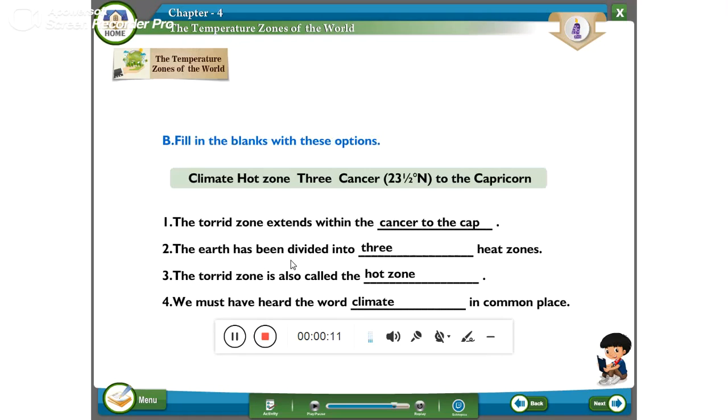First one. The torrid zone extends within the dash. What we have to write? We have to write cancer to the Capricorn.